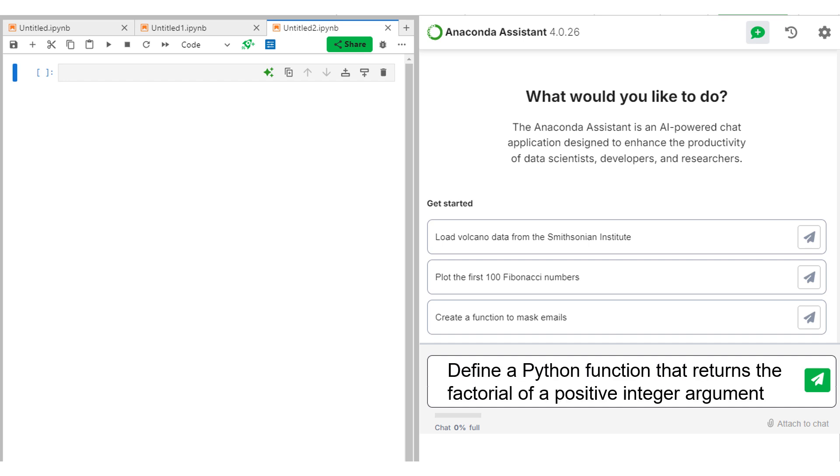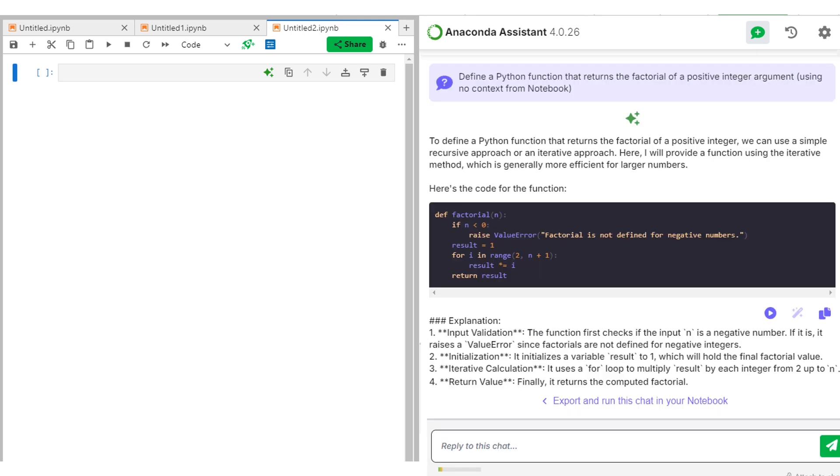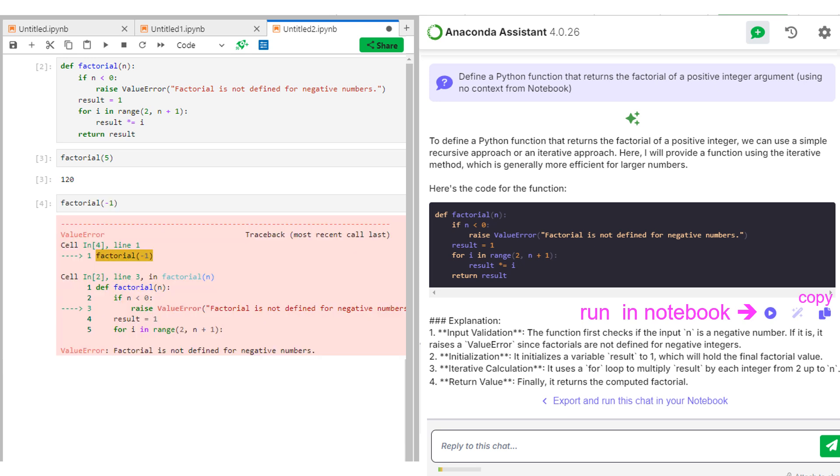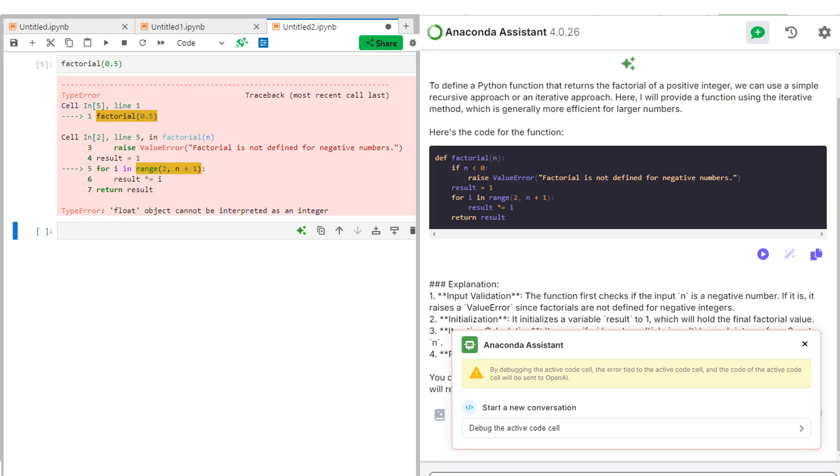So define a Python function that returns the factorial of a positive integer argument. And here's its response. Now I could copy this code or I could click this little run arrow and run it in the notebook. There it is. So let's see if it works. Let's take the factorial of five. Well, I type that in and then I can click the arrow there on the toolbar or do Shift+Enter to execute this cell, and I get 120. But what about if I put in negative one? Well, notice that we said positive integer in our prompt, and therefore it throws an error when you have a negative in it. But what about the factorial of 0.5? Well, then we get this weird looking sort of thing, a type error, and we just don't want to do anything except have positive integers.